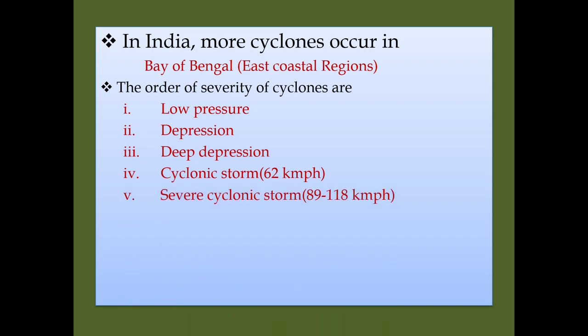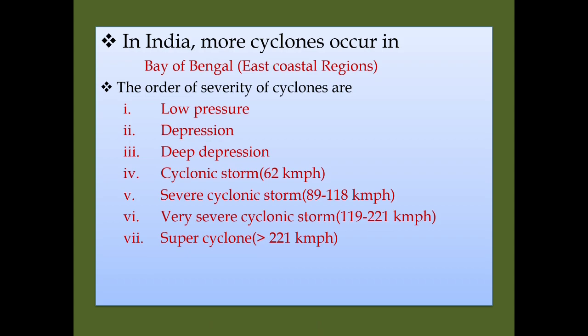If the wind speed is between 89 to 118 kilometers per hour, it becomes a severe cyclonic storm. Then a very severe cyclonic storm has a wind speed of 119 to 221 kilometers per hour. If the wind speed is greater than 221 kilometers per hour, then it becomes a super cyclone.